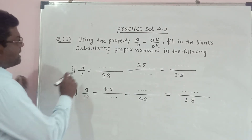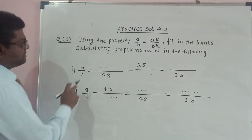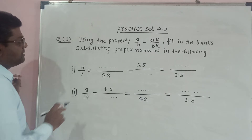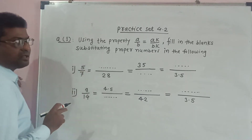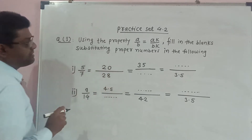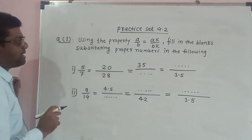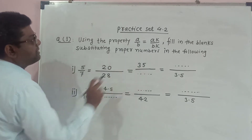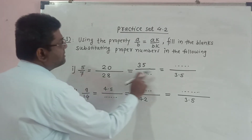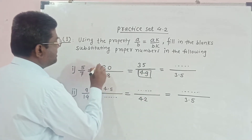Now, 5 upon 7 is equal to — here the denominator is 28. So, if we multiply 7 by 4, we get 28. Therefore, we have to multiply the numerator also by 4. 5 into 4 will be 20. So the answer is 20. Now, the numerator is given as 35. 5 into 7 is equal to 35, and therefore 7 into 7 is equal to 49. Here the answer will be 49, and here will be 20.